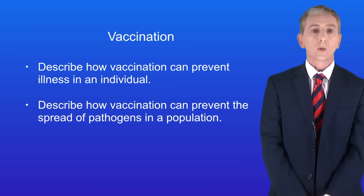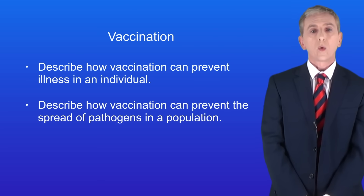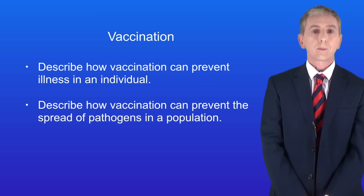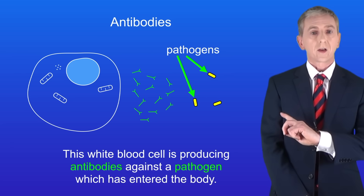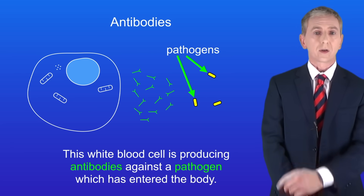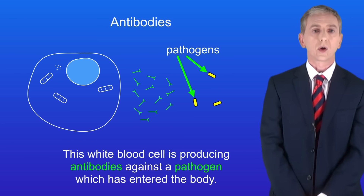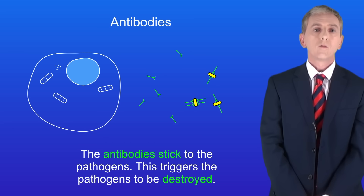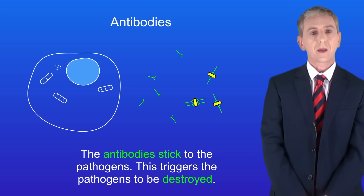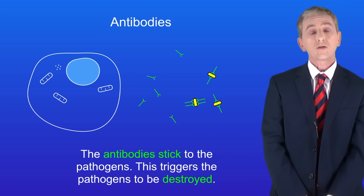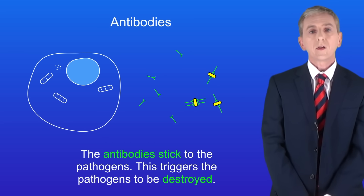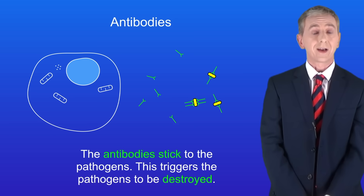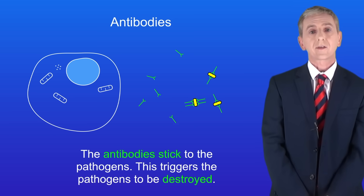In the last video we looked at the immune system. We saw that one of the roles of white blood cells is to produce antibodies against pathogens. This white blood cell is producing antibodies against a pathogen which has entered the body. Remember that antibodies stick to the pathogens and this triggers the pathogen to be destroyed. In this video we're looking at how vaccinations can prevent illness.